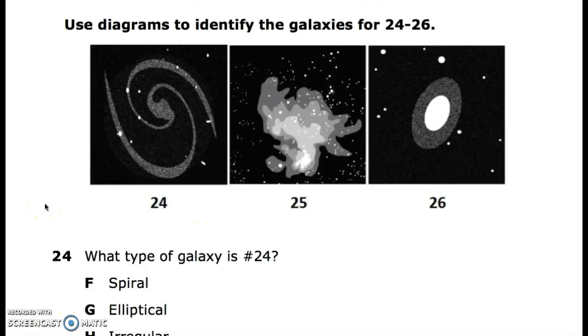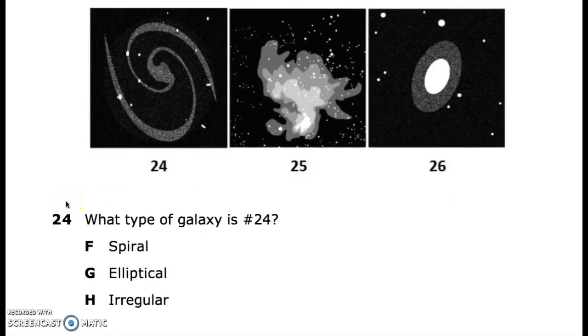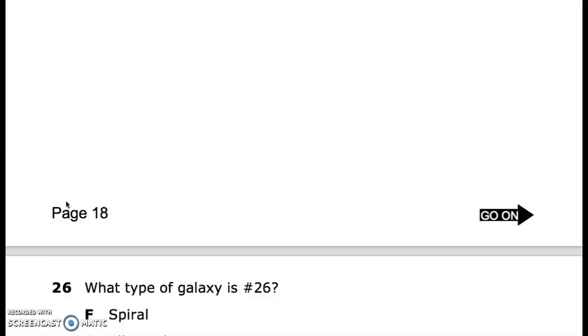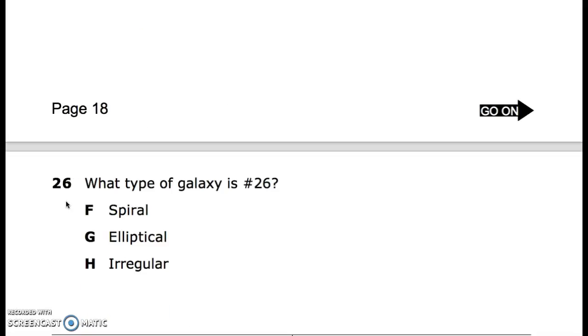Use diagrams to identify the galaxies for 24 through 26. 24. What type of galaxy is 24? Spiral, elliptical, irregular. What type of galaxy is number 26? Spiral, elliptical, irregular.